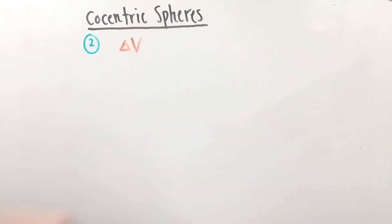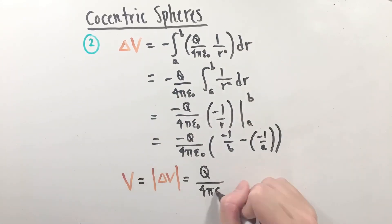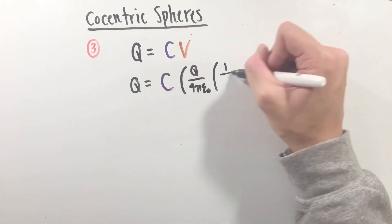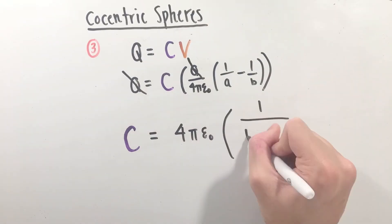For step two, we can integrate the negative of our electric field from the inner to outer radius again. Finally, plugging this into our equation Q equals CV, the capacitance of two co-centric charged spheres can be found.